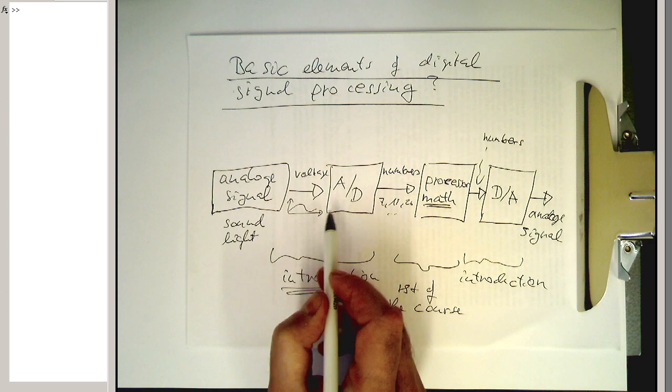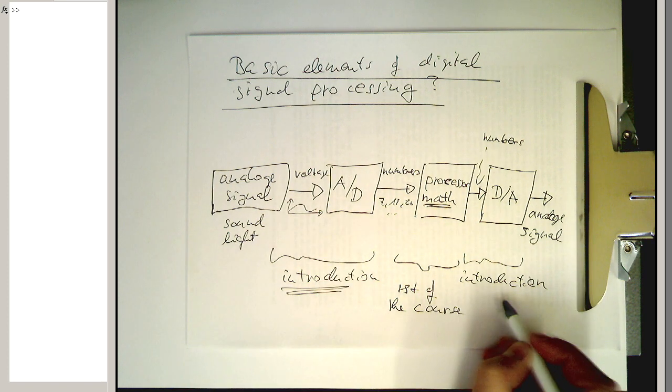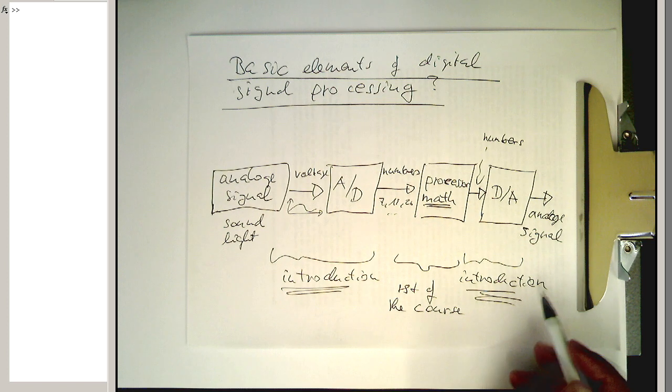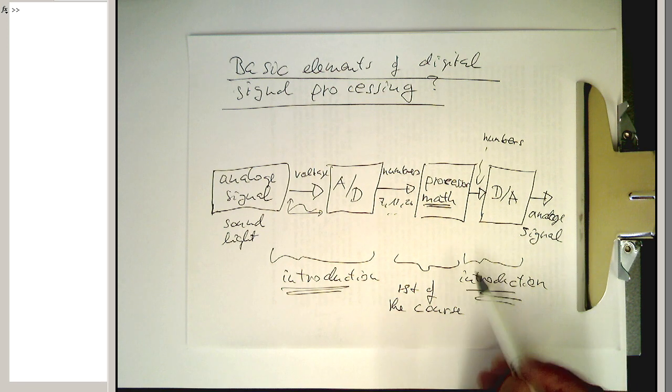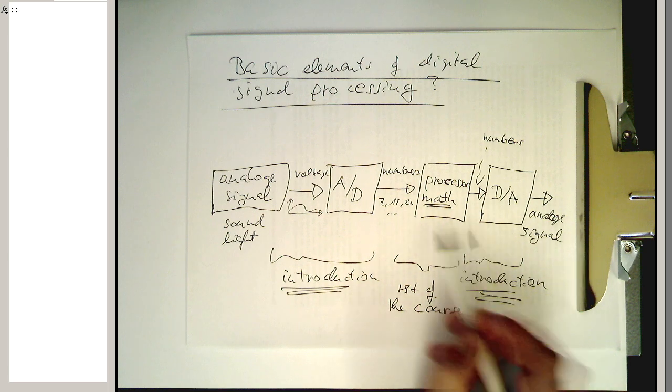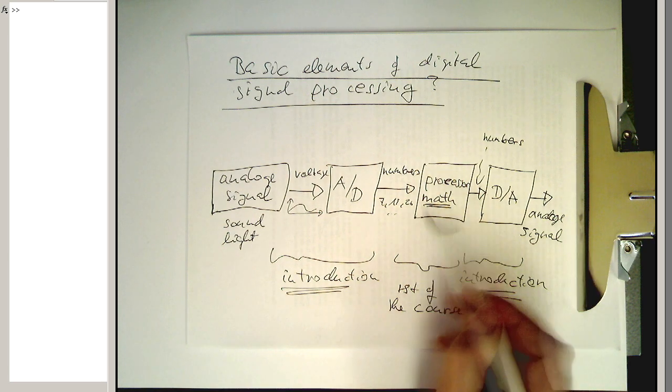So we're dealing with the AD conversion, and we're dealing a bit with the conversion back into analog signal. And once we've covered that, then we can after this deal with the real problems here, which is basically the number crunching which is happening here.